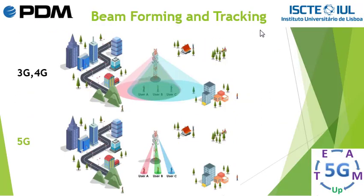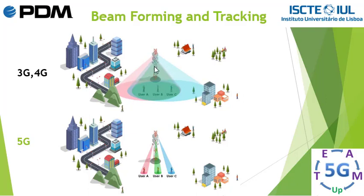What is beamforming and tracking? In 3G and 4G, when a user wants to communicate with the cell tower, the cell tower sends the signal to all the area covered by the cell tower. So users A, B, and C all receive signals transmitted in all directions covered by the cell tower, which consumes a lot of energy.